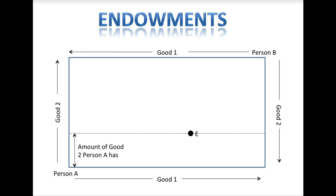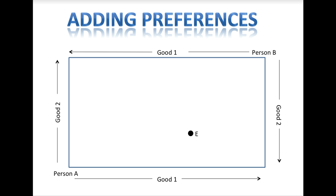For Person B, measure the vertical distance from the top of the box down to the endowment point to determine how much of Good 2 Person B begins with. Note that each person may or may not like their current endowment. This depends on their preferences, which is the next piece of the model that we will add to the box.